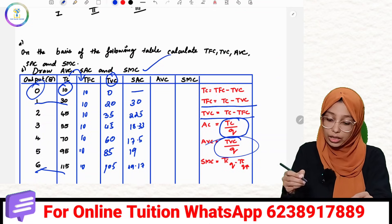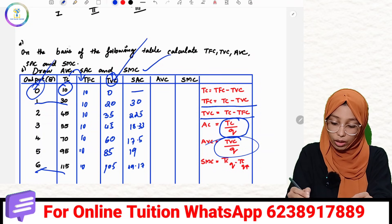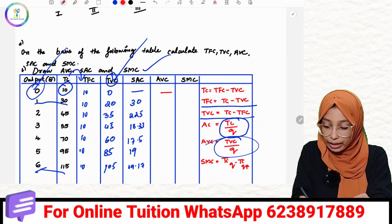This is average variable cost. The total variable cost divided by quantity.